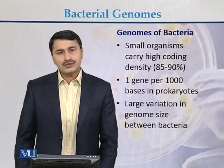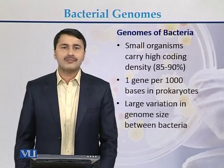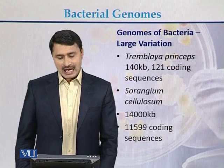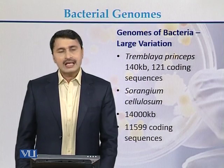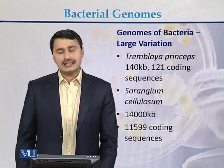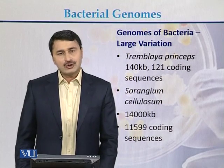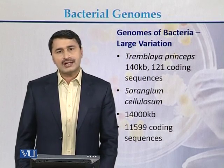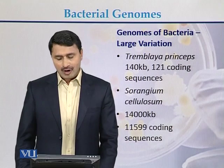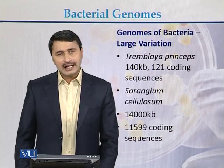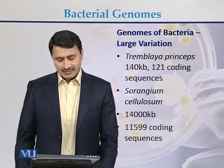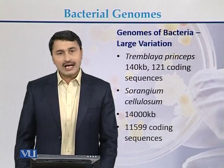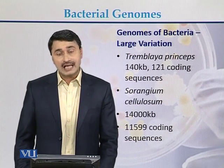There is a large variation in genome size between bacteria or prokaryotes. The first example is of the bacterium Tremblaya princeps, whose genome consists of 140 KB and contains 121 coding genes. On the other hand, another bacterium, Sorangium cellulosum, has a genome of 14,000 KB in size, with 11,599 coding sequences.